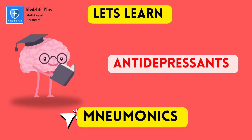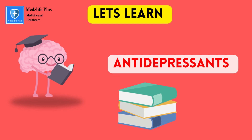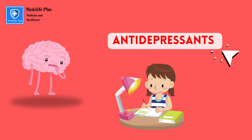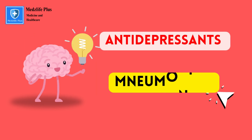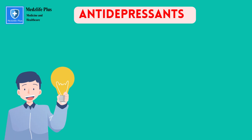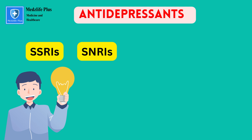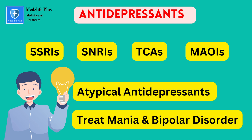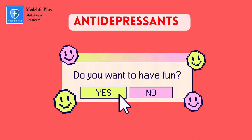Let's learn antidepressant drugs with the help of mnemonics. There are so many drugs included under the antidepressants class and it's really hard to remember all of them, but don't worry — we'll help you remember with simple mnemonics. Antidepressants include the following classes: selective serotonin reuptake inhibitors, serotonin-norepinephrine reuptake inhibitors, tricyclic antidepressants, monoamine oxidase inhibitors, atypical antidepressants, and drugs to treat mania and bipolar disorder.